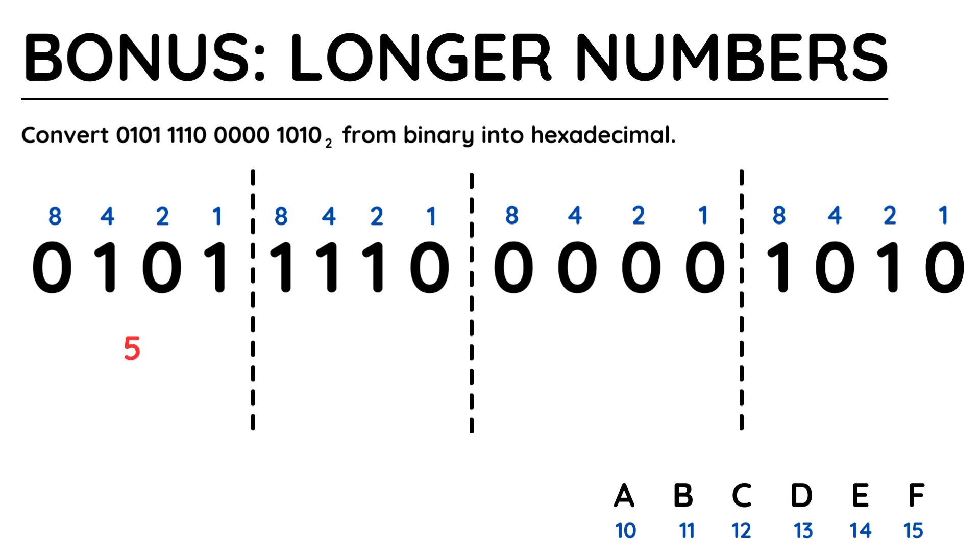Starting from the left, 4 plus 1 is equal to 5. 8 plus 4 plus 2 is 14, 14 in hexadecimal is the letter E.